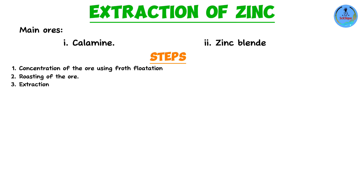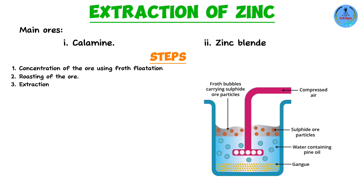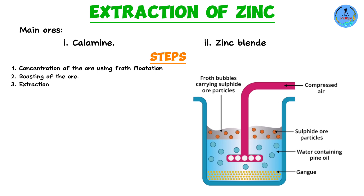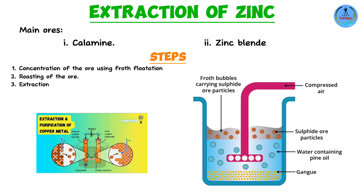Starting with concentration of the ore — these ores come with impurities, mostly in the form of other minerals and metals. We need to concentrate the ore by removing as many impurities as possible. In most cases this is done through froth flotation. I won't discuss this method here as I've already covered it in my video on extraction of copper, so be sure to check it out.